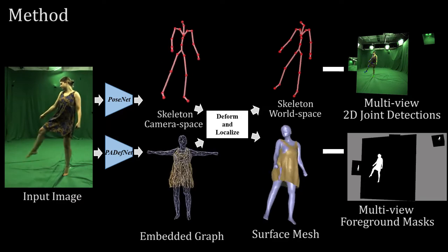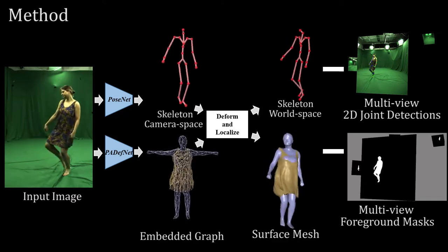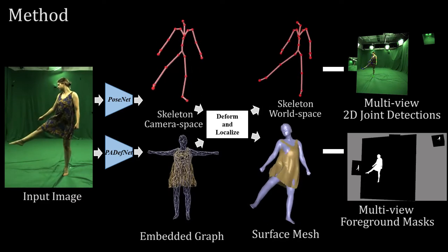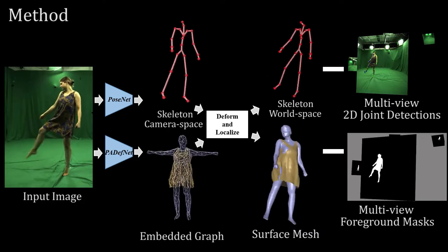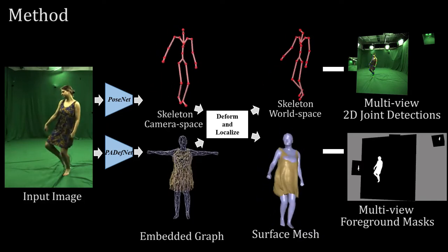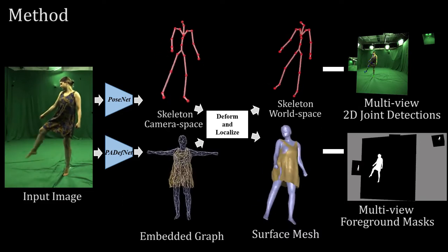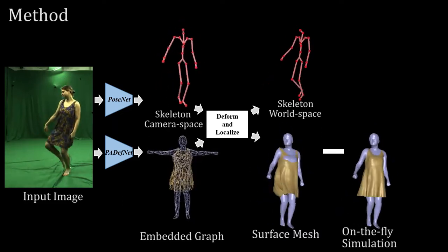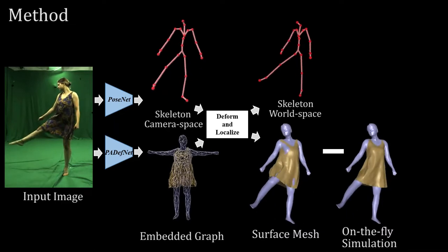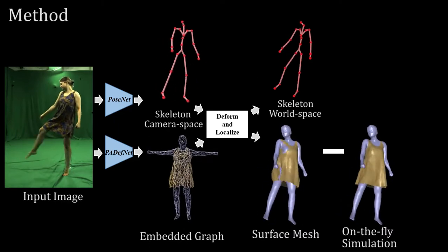We first pre-train PaDevNet without running simulation but using a geometric regularizer. Although this pre-trained stage allows the surface to already match image evidence, it can neither account for collisions of body and clothing nor ensure physically plausible cloth deformations. We address this by using our on-the-fly simulation results to supervise our cloth geometry.